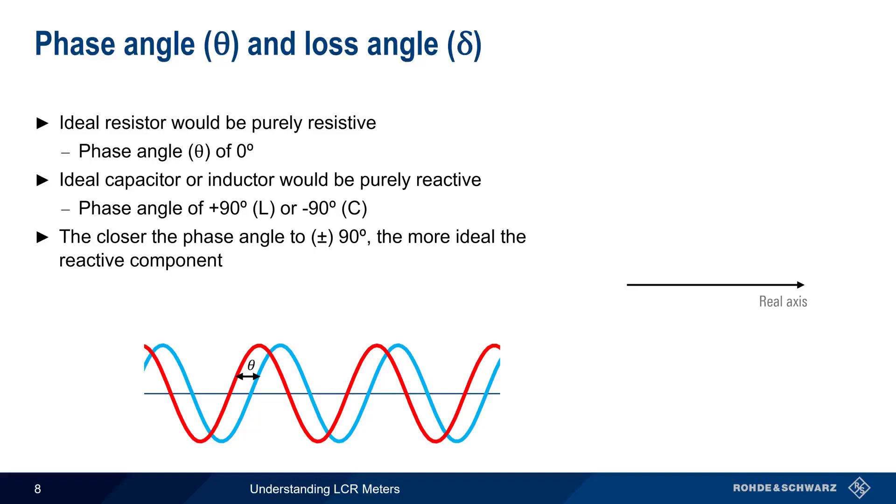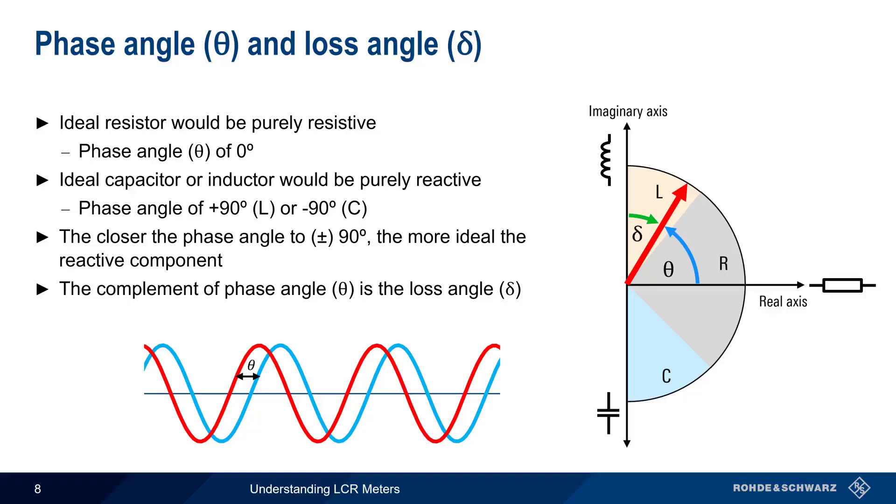Let's go back to our diagram with real and imaginary axes. The real axis represents resistance. The positive part of the imaginary axis represents inductance, and the negative part represents capacitance. An ideal inductor would have a positive 90 degree phase angle, but real inductors are not purely reactive, and therefore have a phase angle of less than 90 degrees. A phase angle of less than 90 degrees indicates some resistive loss in the component, and therefore the loss angle is defined as the complement of the phase angle. For example, if the phase angle theta were 80 degrees, the loss angle delta would be 90 minus 80, or 10 degrees.